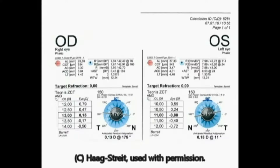It is difficult to reliably measure posterior corneal astigmatism, so an alternative is to use a nomogram or a specially designed formula to account for its effect. The Barrett-Toric calculator is one such formula.